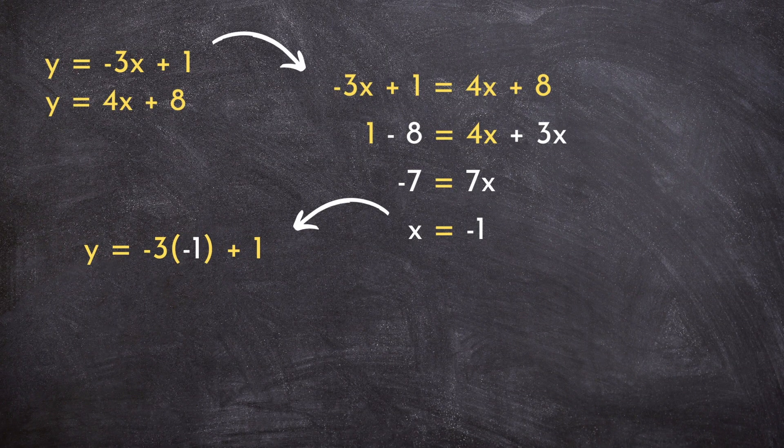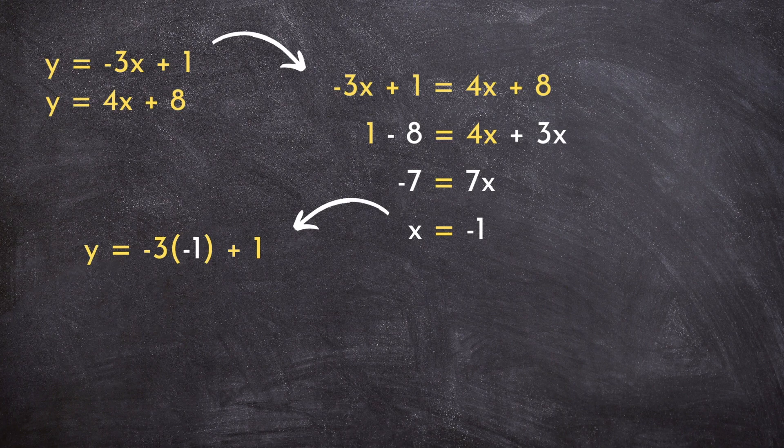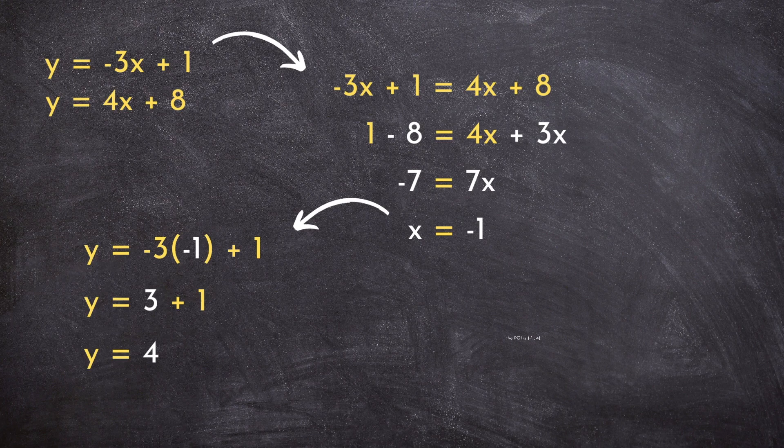Since we have no fractions here, the rest of this example is just like any other substitution problem. We have x, so to solve for y, we just need to substitute x equals negative 1 into our expression for y. And since we have no fractions here, this is a simple calculation that will leave us with y equals 4.